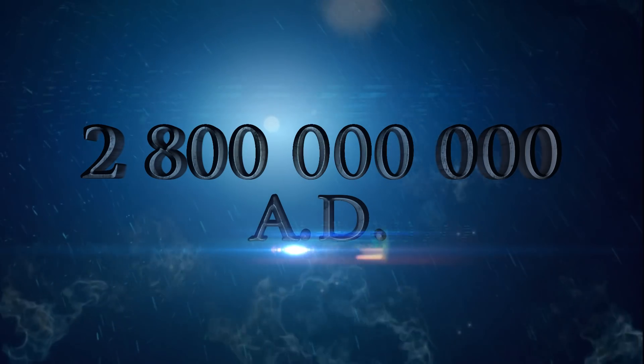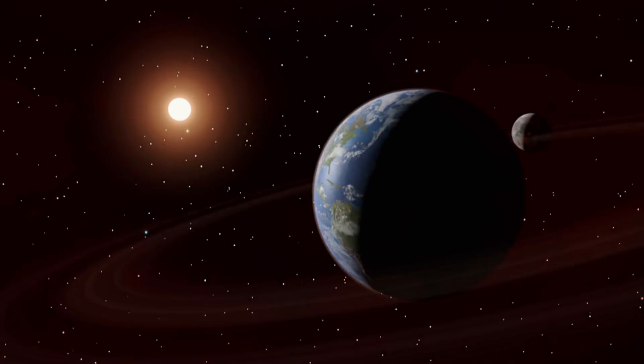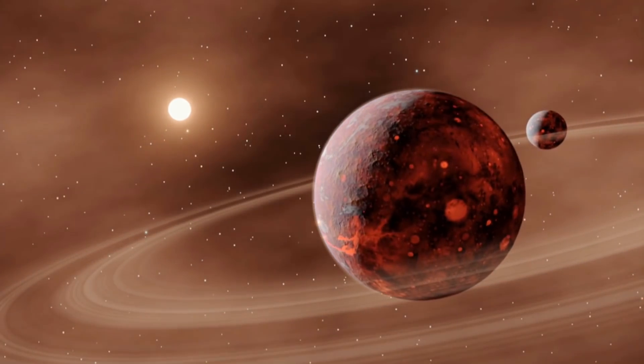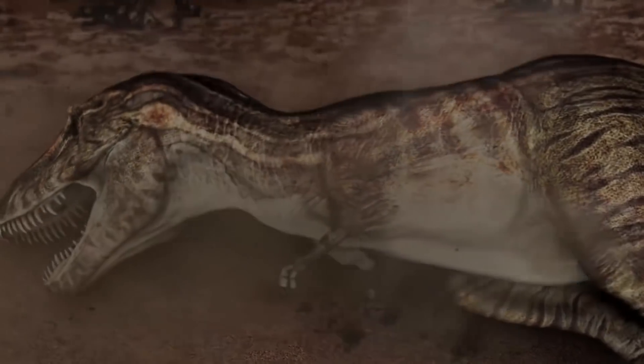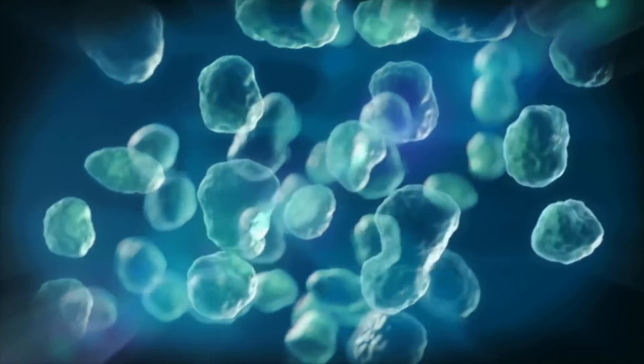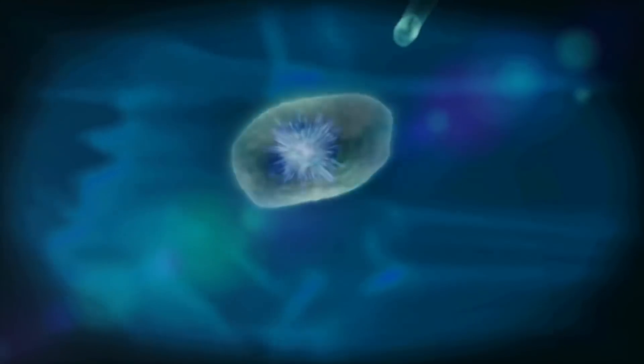Two point eight billion years from now, Earth's surface temperature, even at the poles, reaches an average of 149 degrees Celsius. At this point, life, now reduced to unicellular colonies, is isolated in scattered microenvironments, such as high-altitude lakes or subsurface caves, and will completely die out.